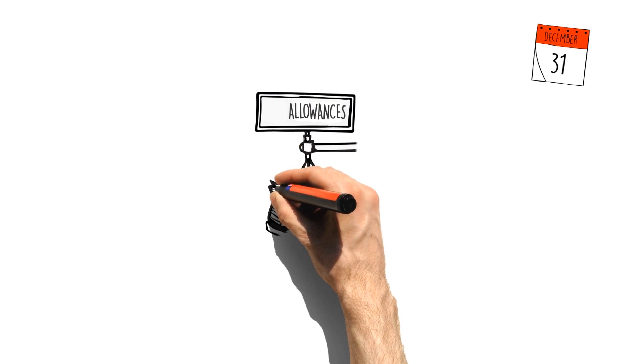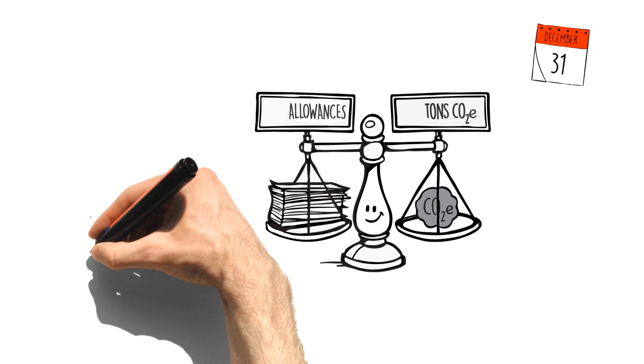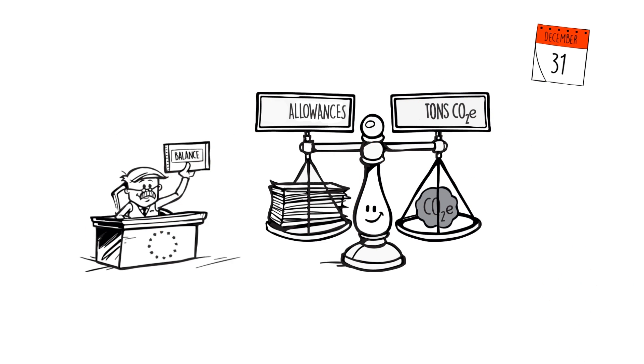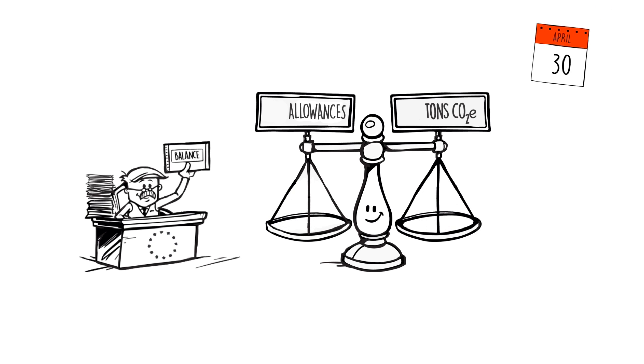At the end of each period, plants must demonstrate a balance in their allowances and their emissions. They then have four months to return the corresponding allowances to the market authorities.